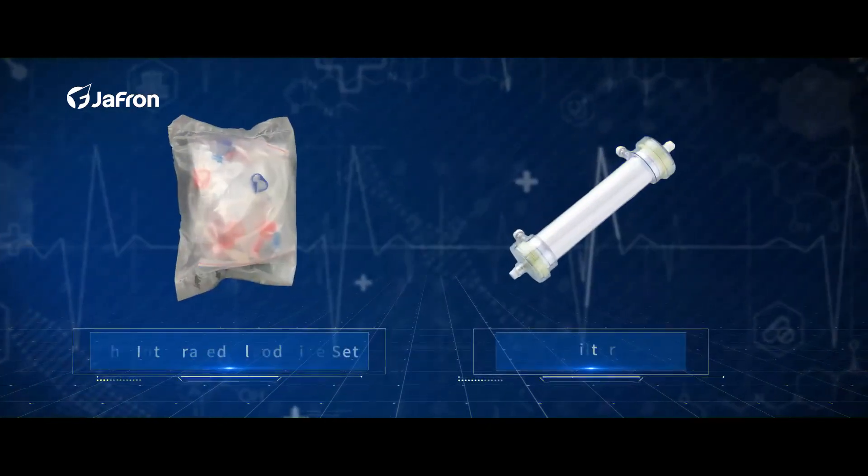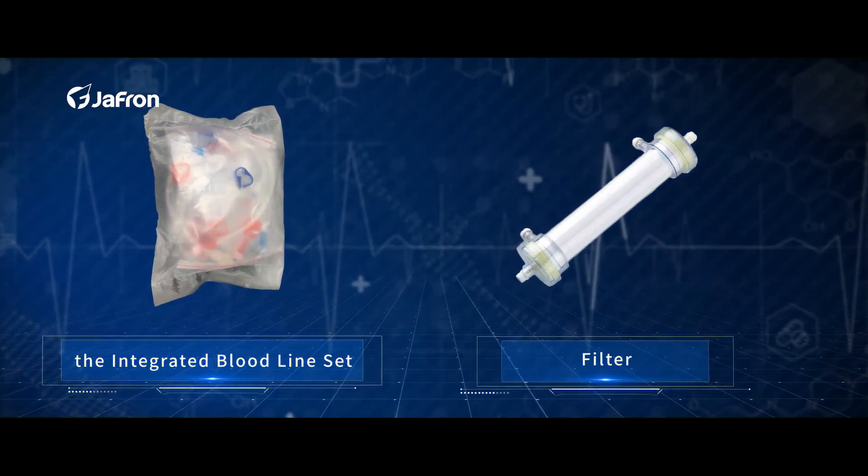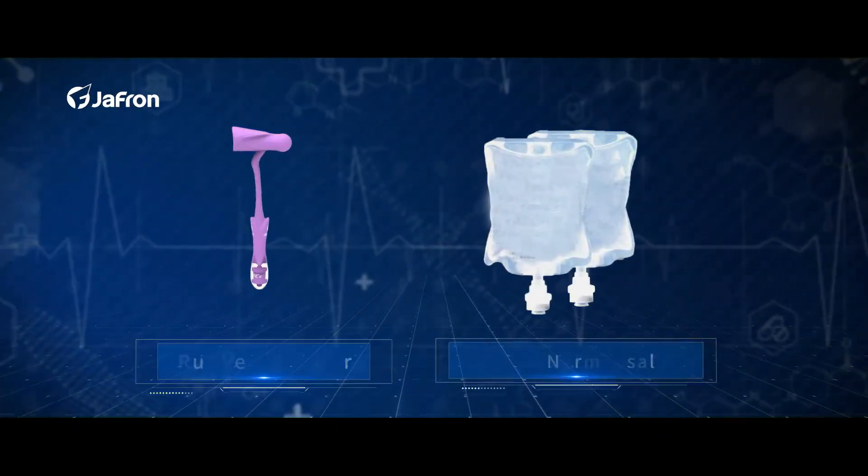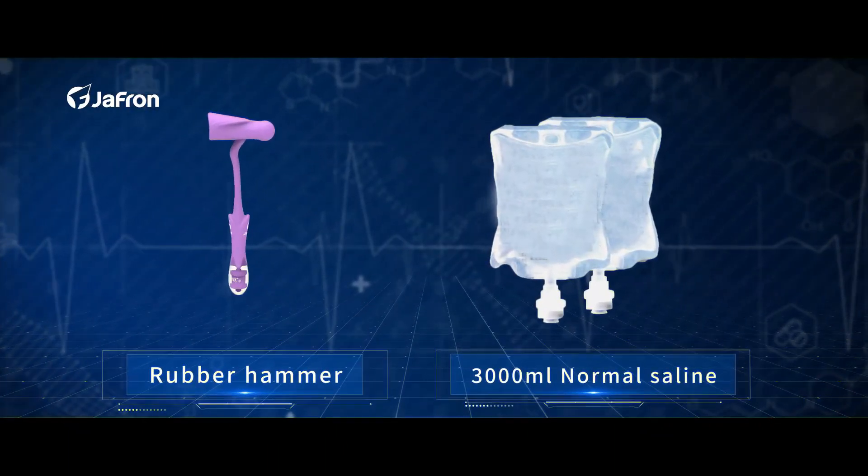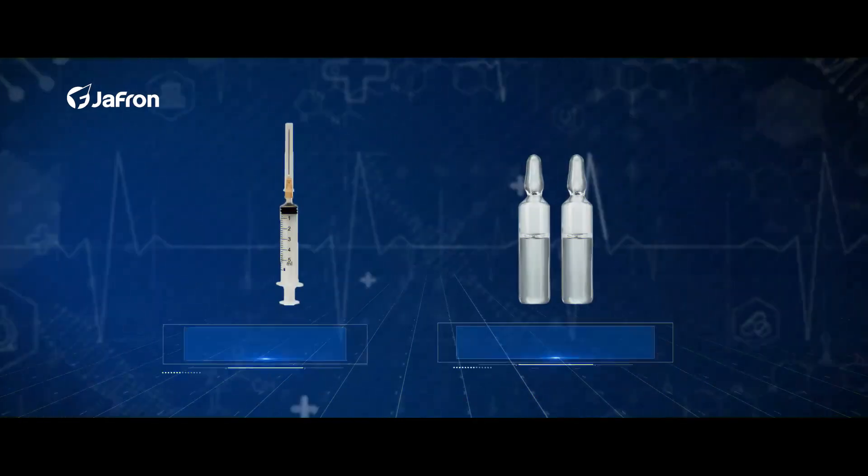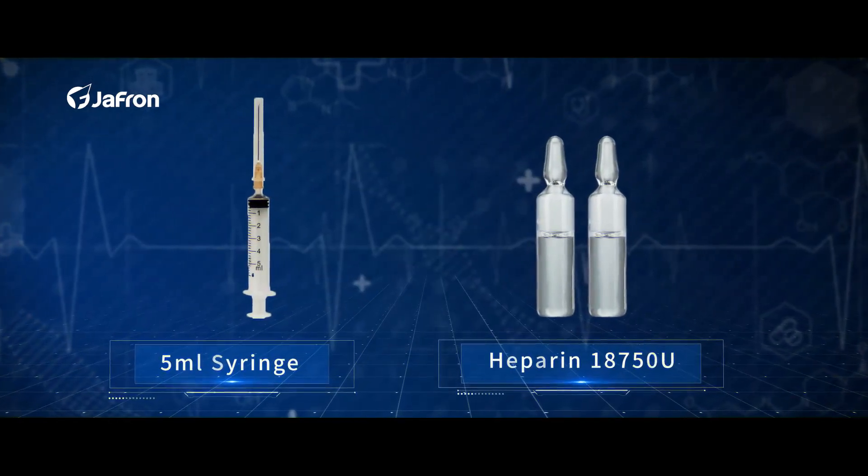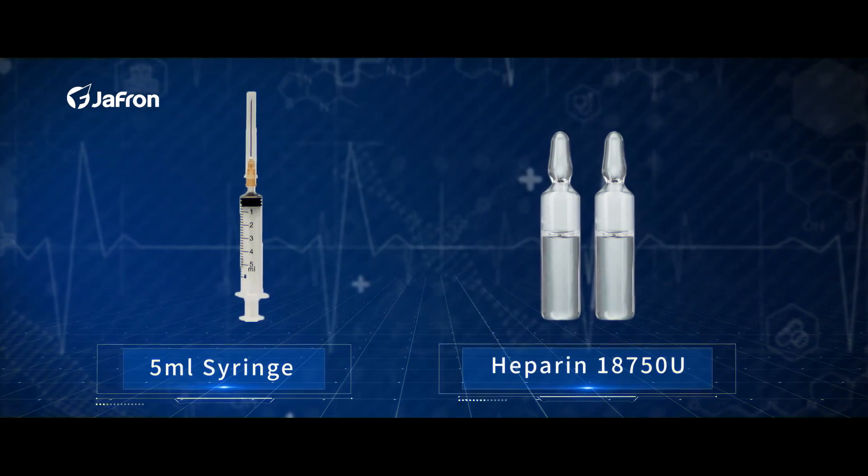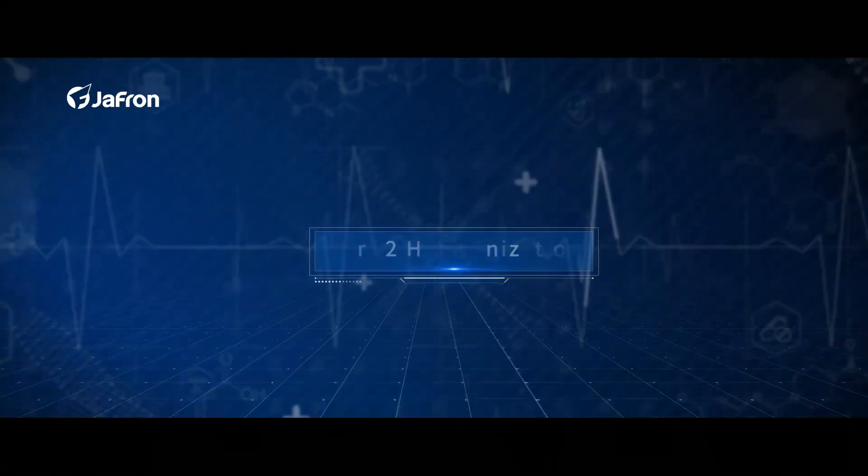The Integrated Bloodline Set, Filter, Rubber Hammer, 3000ml Normal Saline, 5ml Syringe, Heparin 18,750 units.